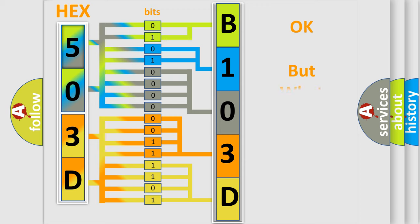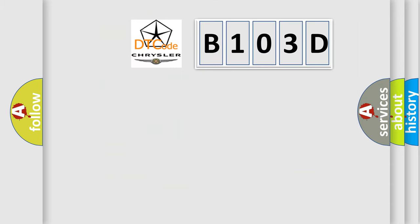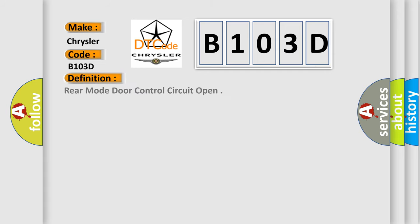We now know in what way the diagnostic tool translates the received information into a more comprehensible format. The number itself does not make sense to us if we cannot assign information about what it actually expresses. So, what does the diagnostic trouble code B103D interpret specifically for Chrysler car manufacturers?